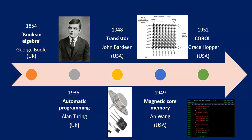Next, during World War 1936, automatic programming was introduced by Alan Turing. There is a big contribution of Alan Turing in computer science — he is also known as the father of theoretical computer science. In 1948, the transistor came, which was a big invention and improvement for computers. In 1949, magnetic core memory was invented by An Wang in the USA. Next, in 1952, one of the first programming languages for computers was introduced.